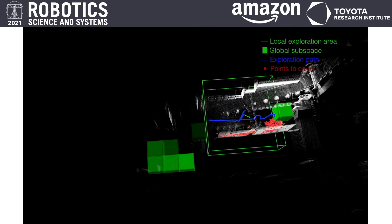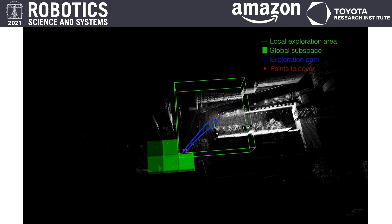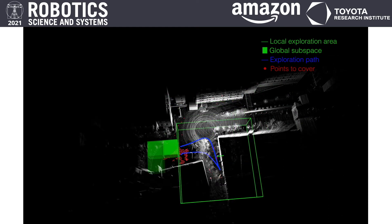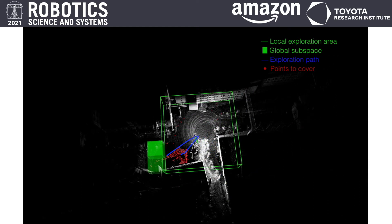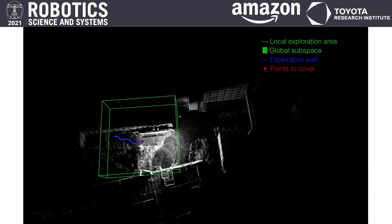What we are seeing now is the overall exploration process at 12 times real-time speed. The vehicle started from the left side of the scene, explored to the right side, and then returned to the start point in the end.